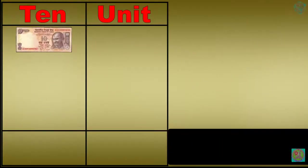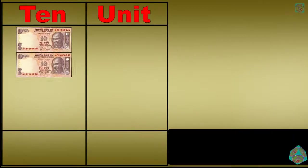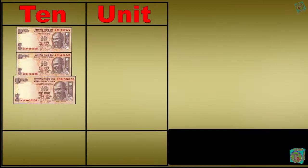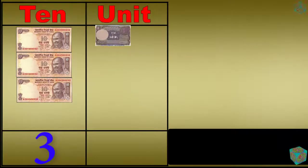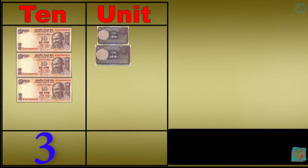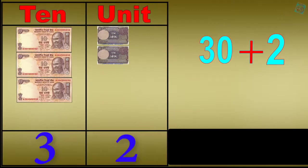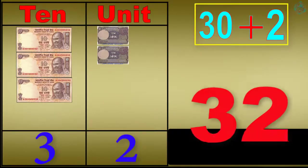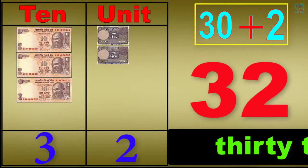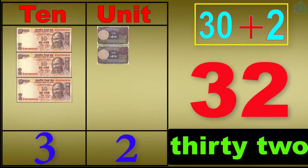1 ten, 2 tens, 3 tens, 3 tens 1 unit, 3 tens 2 units. 30 plus 2 equals 32. T-H-I-R-T-Y-T-W-O, 32.